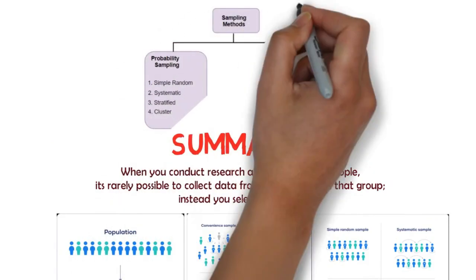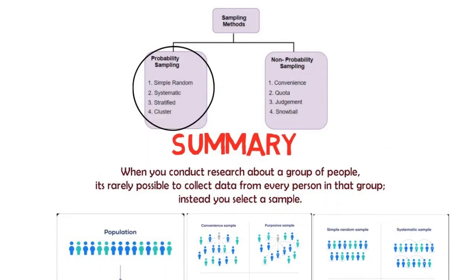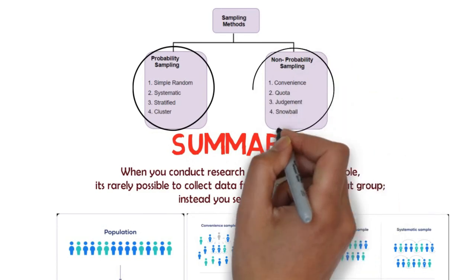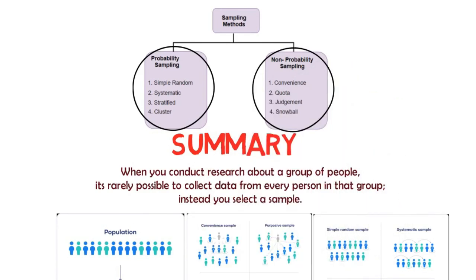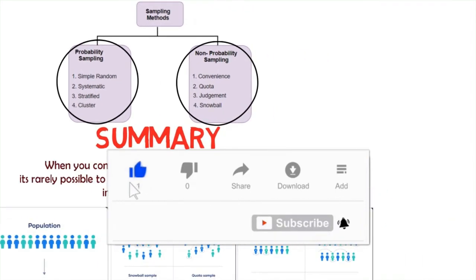There are two types of sampling methods. Probability sampling involves random selection, allowing you to make strong statistical inferences about the whole group. Non-probability sampling involves non-random selection based on convenience or other criteria, allowing you to easily collect data. Please subscribe to this channel if you haven't, like and share this video, and leave any comments or questions you have below.